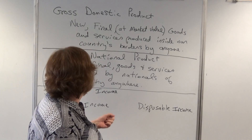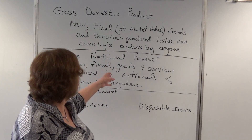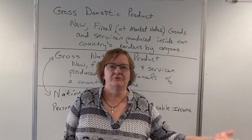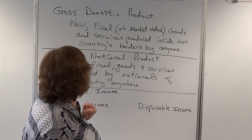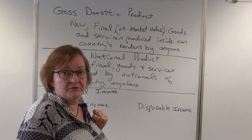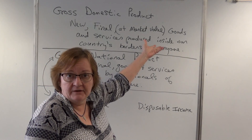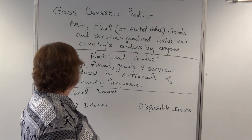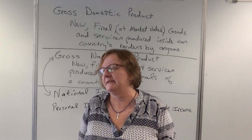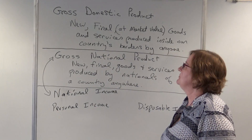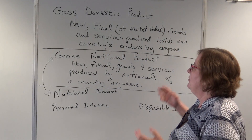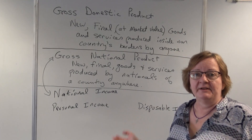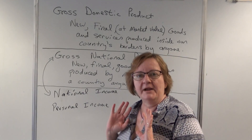Or if an American goes to France and manufactures something there, France will count it because it's inside their borders, made by anyone — and the United States will also count it under gross national product because it's made by Americans anywhere. So it gets double counted. We finally decided that since the majority of the world was using gross domestic product, we would switch to gross domestic product, and then had to go back and recalculate everything prior.